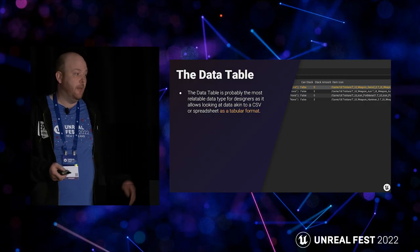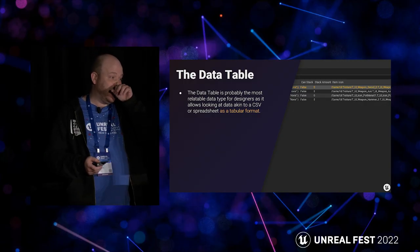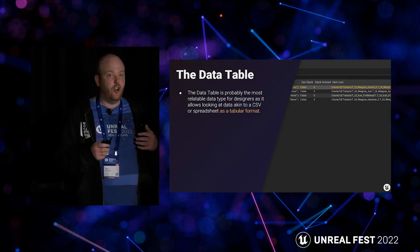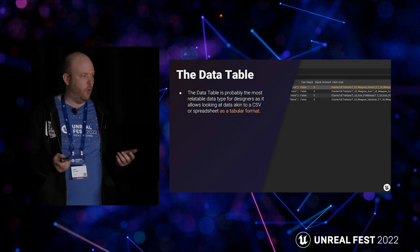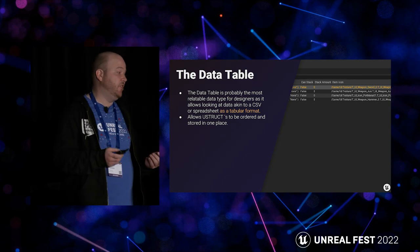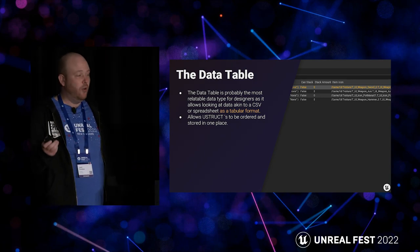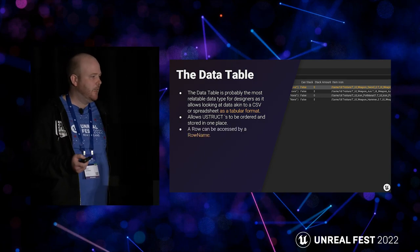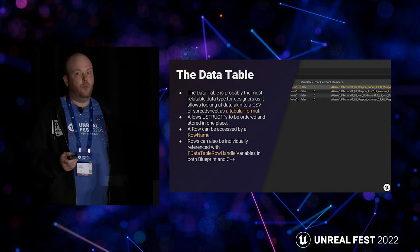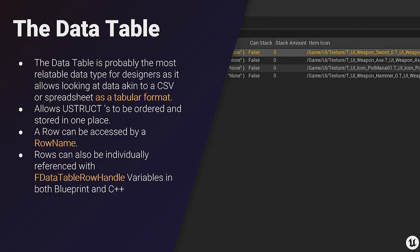Let's dive into our first amazing tool. It's one that folks are probably already familiar with, and that is the data table. The data table is the most relatable data type for designers, as it allows looking at data akin to a CSV or a spreadsheet — a tabular format. It allows structs to be ordered and stored in rows, and these rows can be accessed by row name. We can also address data as individual rows in both C++ and Blueprint.